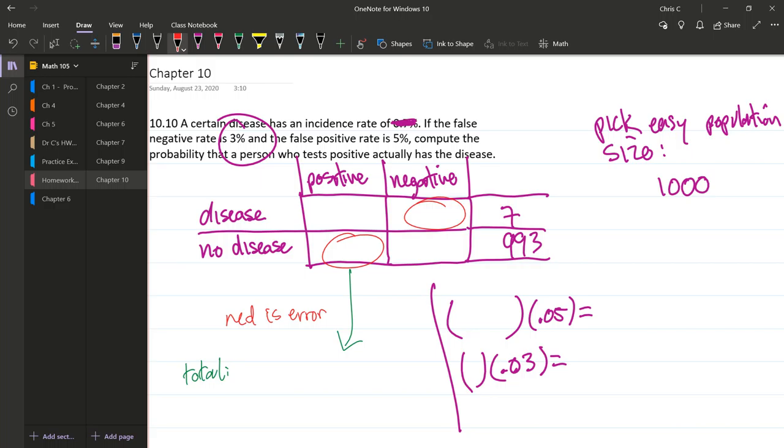993 do not have the disease. So that takes care of this part. Now we're going to move on to the next part.